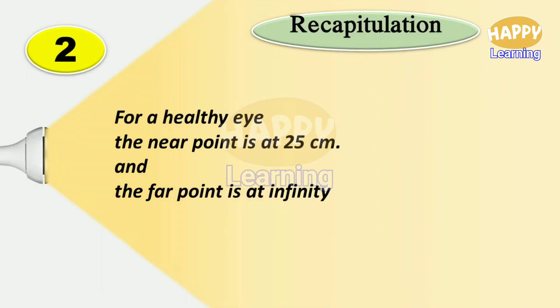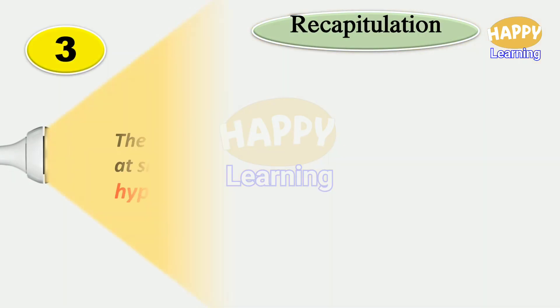For a healthy eye, the near point is at 25 centimeter and the far point is at infinity.